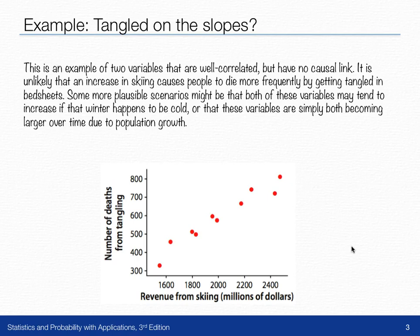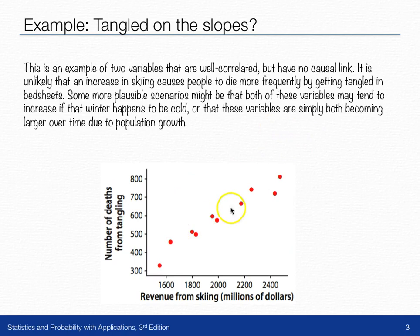Some plausible scenarios might be that these variables both increase due to cold weather — maybe people want to stay in bed longer when it gets colder, which also might mean more revenue for skiing. Or maybe the simple explanation is that they're both tending to increase because the population is growing.